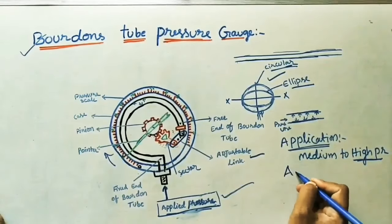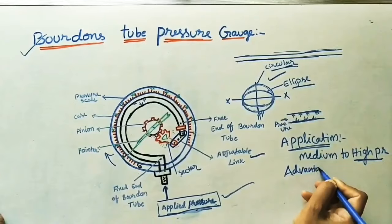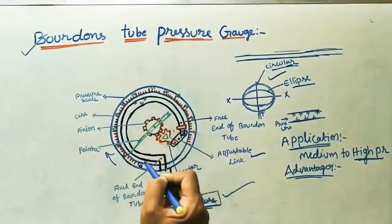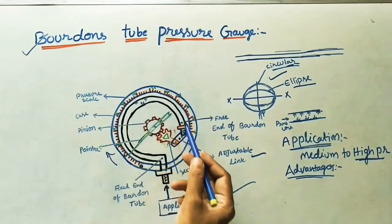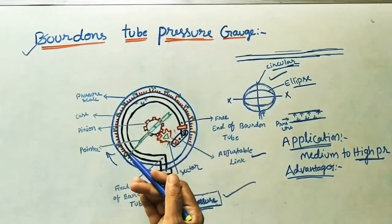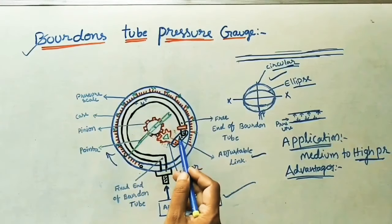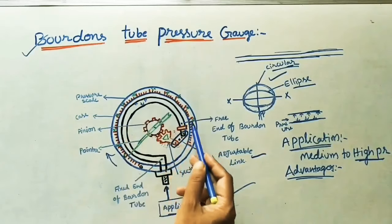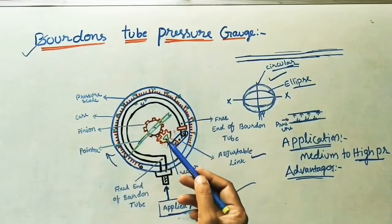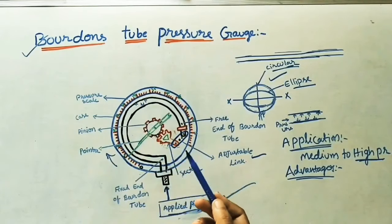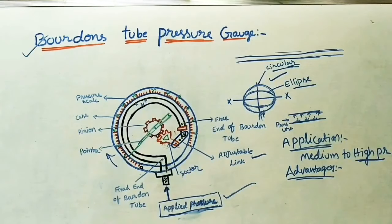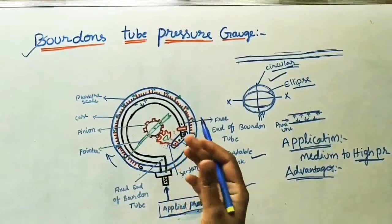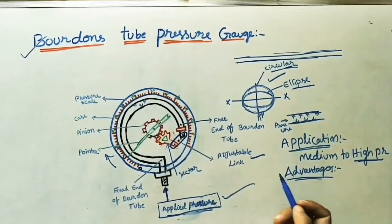The advantages of the Bourdon tube: it has a very simple construction — only one Bourdon tube is used — so the cost is less and the working process is very easy. It can be modified to give electrical outputs, allowing connection to a voltmeter or ammeter to show readings. Accuracy is more at high pressure, and some instruments may not work at high pressure whereas the Bourdon tube gives correct values.